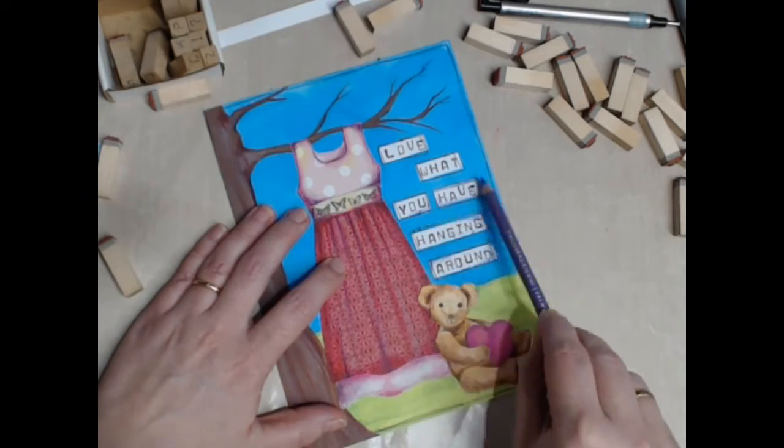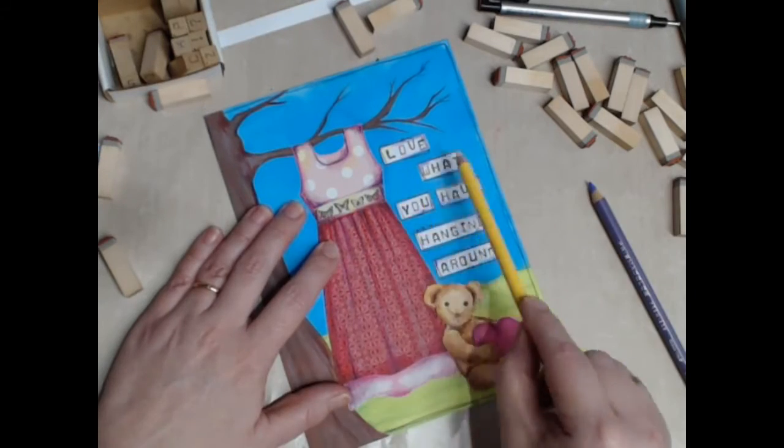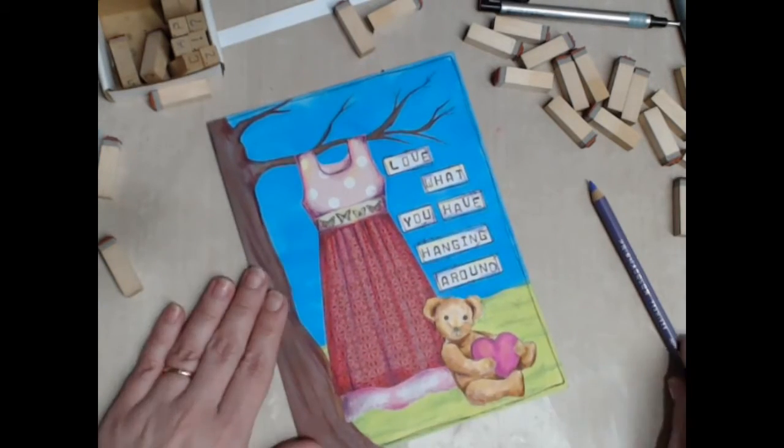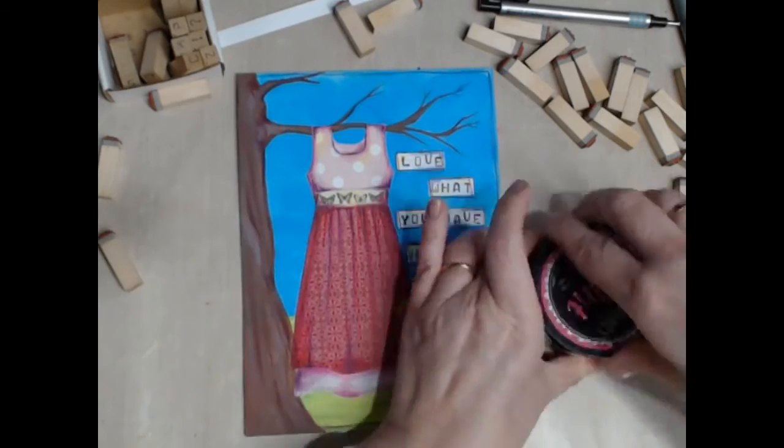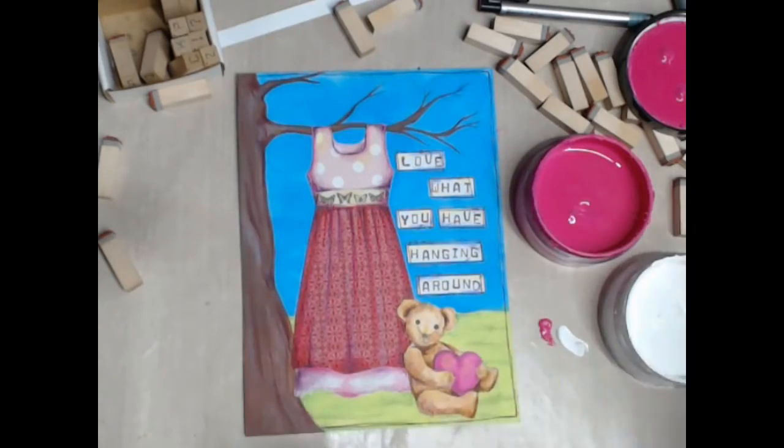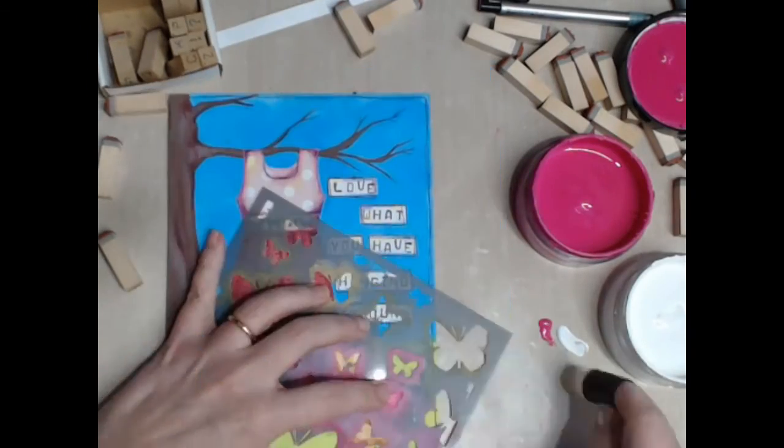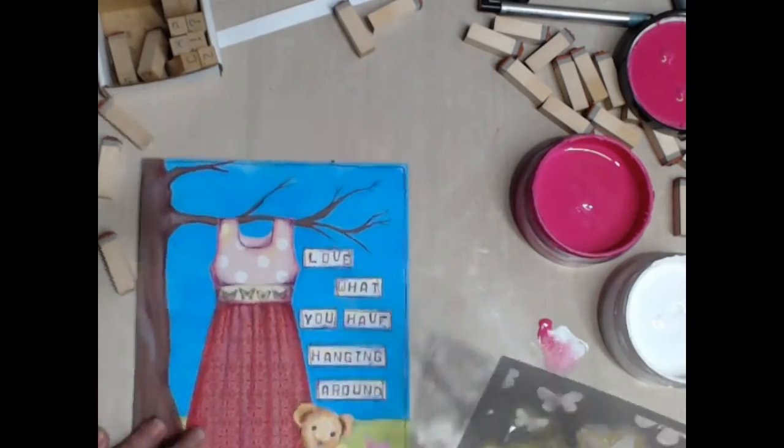Now those white rectangles are really standing out, so to tie it in I've just picked up some of the colours that I've used throughout my design and just added touches to each rectangle, just to push it further into that background.